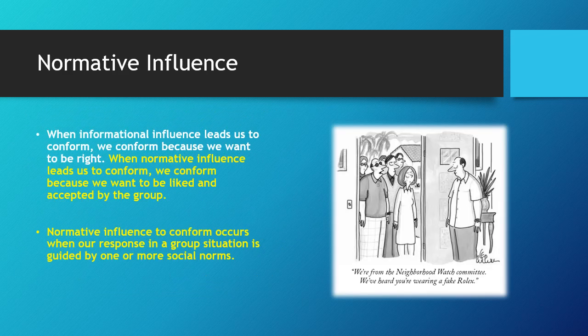Normative influence, on the other hand, leads us to conform because we want to be liked and accepted by the group — for example, saying you like K-pop because everybody else likes K-pop. Normative influence to conform occurs when our response is guided by social norms. The group and society say you should have the coolest clothes and name brands — we buy name brands because we want that label. You should buy things because you like them, not because other people like them.